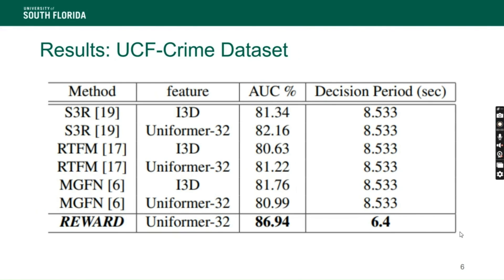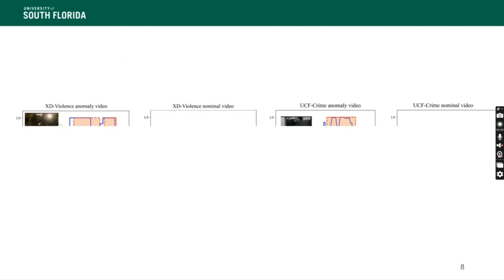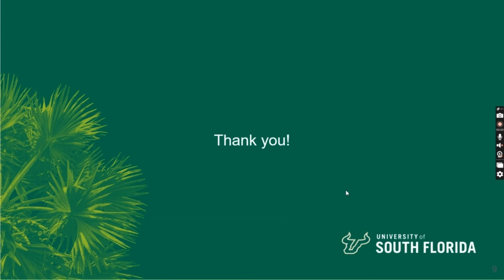We also show results on HD Violence alongside UCF Crime, and we see a similar performance boost on small decision periods. A visual example of predictions produced by our model compared to the ground truth on an XD Violence anomaly video shows that the predictions are very close to the ground truth.